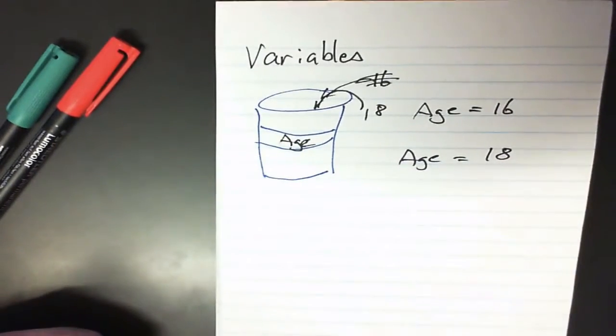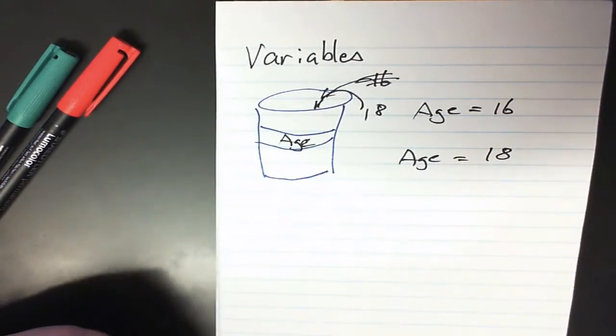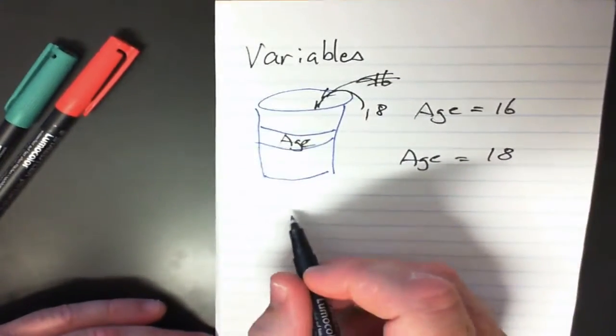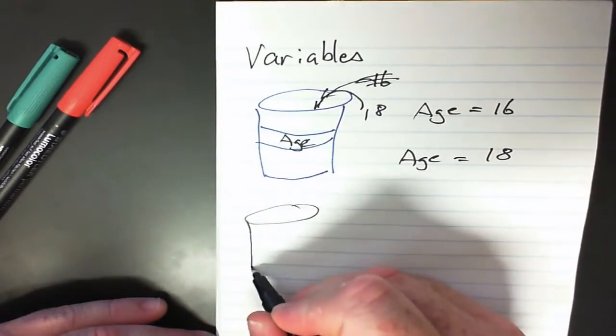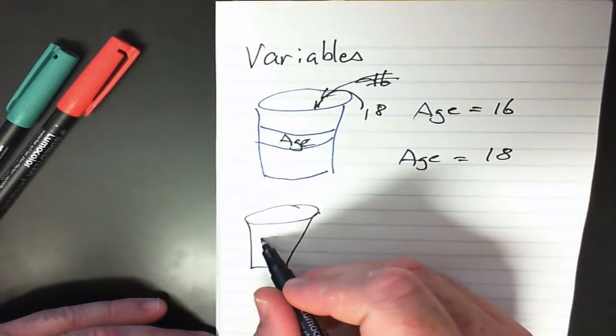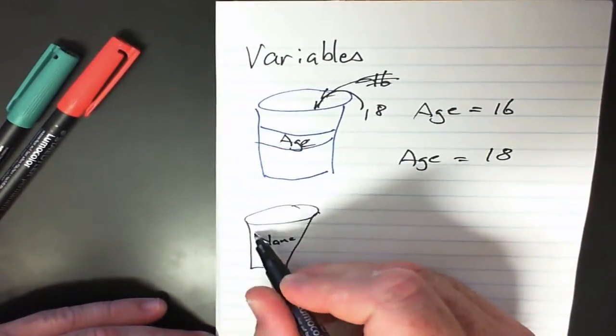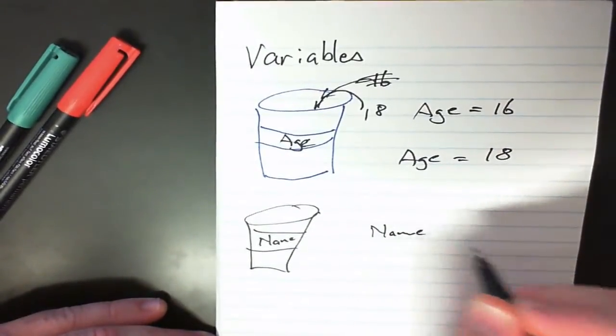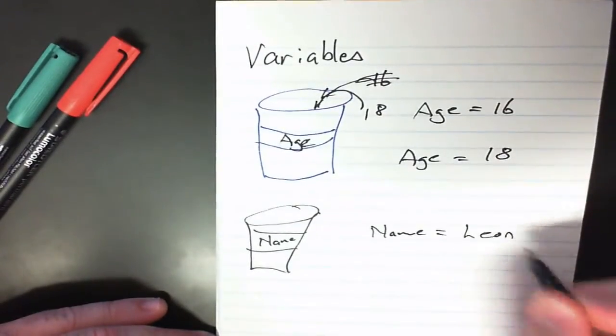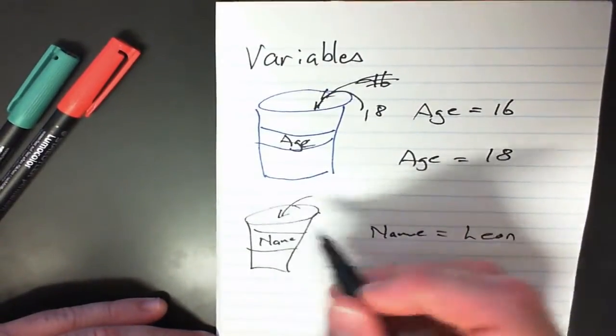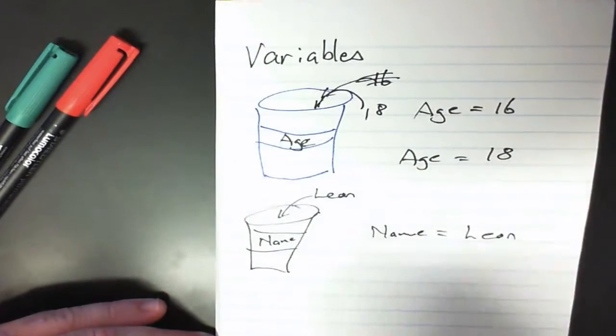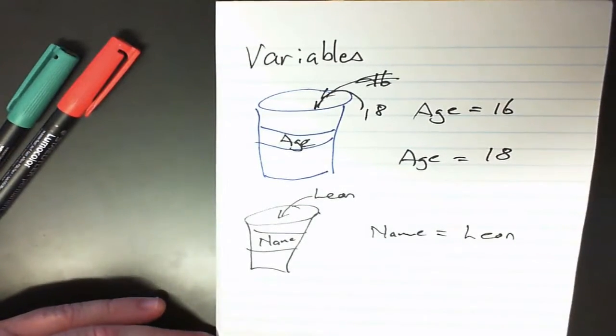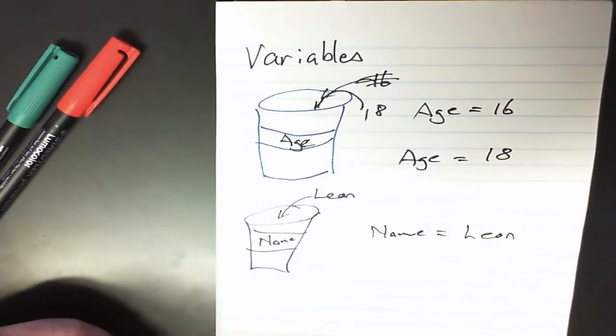We can have all sorts of buckets. So we could have another bucket and this one could be name, and we could say name is equal to Leon, and therefore Leon is placed into the bucket. So variables are very very useful.